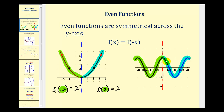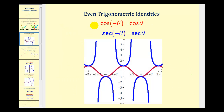For the trig function, if we consider x equals pi over two — this point here — we know f of pi over two is equal to zero. And f of negative pi over two is also equal to zero. So here are the even trig identities: cosine of negative theta is equal to cosine theta, and the same is true for the reciprocal function, secant theta. You can see graphically that these are symmetrical across the y-axis.